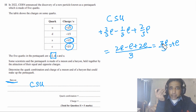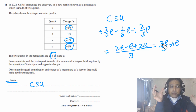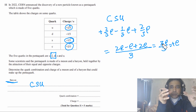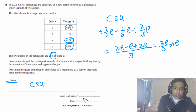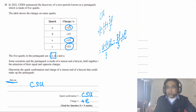So the meson has a charge of minus e and the baryon has a charge of plus e. The charge on the baryon equals the charge on a positron, and the charge on the meson equals the charge on an electron — so these two attract each other with equal and opposite charges. The quark composition for the baryon is CSU and the charge is plus e.